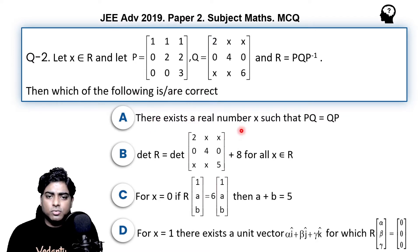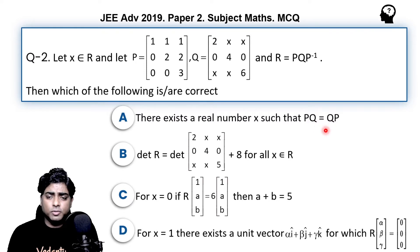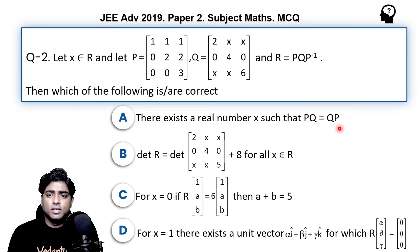One or more options can be correct here. We will look at all the options one by one. Option A: there exists a real number x such that PQ is equal to QP, meaning P and Q are commutative. We have to check whether it is possible or not.